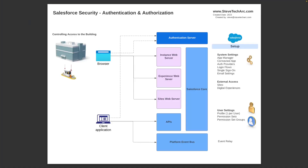Starting with authentication and initial authorization: if we consider Salesforce a secure building, then this is where we're choosing whether or not to let the person into the building. We're catching them through a series of mechanisms that are keeping unprovisioned people and unknown users out. It's also about knowing who we are letting in, properly identifying them, and determining what they can do.